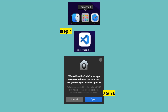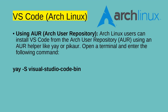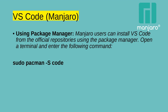Press Command + Space and start typing to find it. If you are using Linux — like in my case — you can do the following. Using an AUR helper like Yay or Paru, open a terminal and enter the following command. This will download and install the pre-built binary version of VS Code from the AUR. Manjaro users can install VS Code from the official repositories using the package manager.